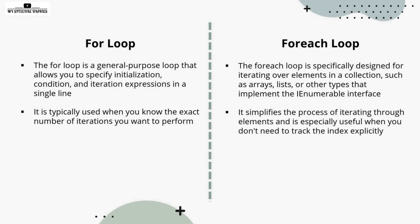Whereas the foreach loop simplifies the process of iterating through elements. It is especially used when you don't need to track the index. There is no need to track what index an element is at in the list — in that case, you use the foreach loop.